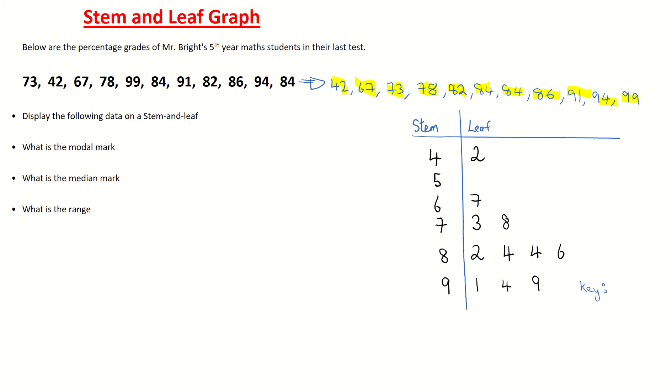So you just pick any number from your stem and leaf. Doesn't matter which one you pick. So I'm going to pick say 7, 78. So I'm going to draw my 7 to stand for 70, then I'm drawing the line from my stem and leaf, and then I'm putting in the 8. And what does 7-8 mean? It means 78%.